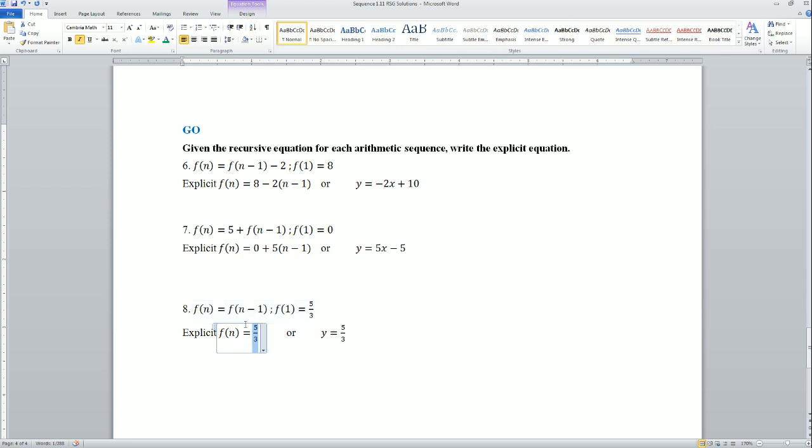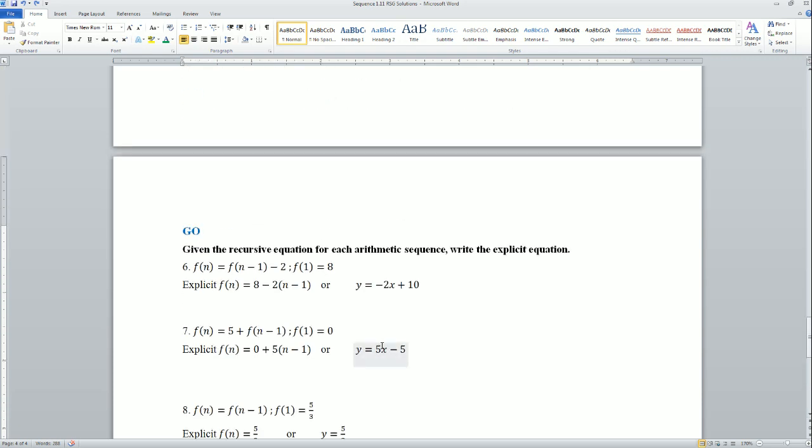So f of n is just your previous term, which is just 5 over 3. So it would look like y is equal to 5 over 3. There you go. That is your homework solution for the 1.11.